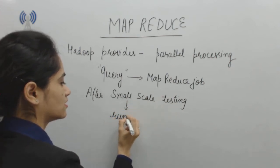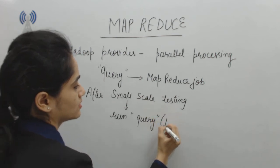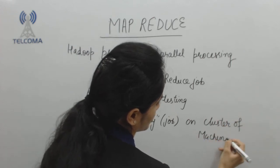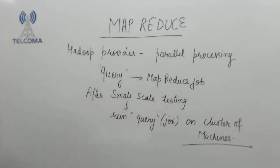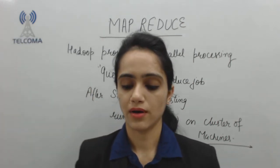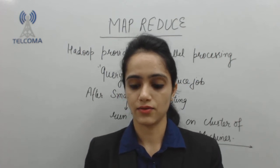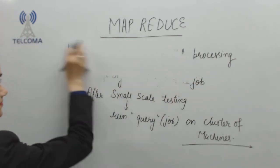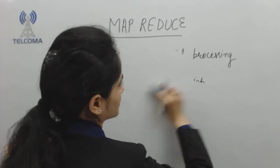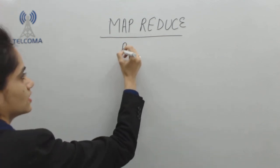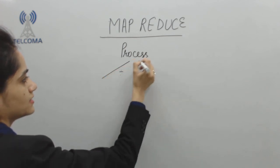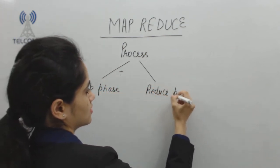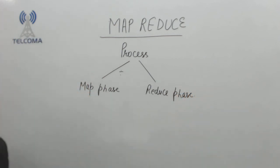We require running our job — which is also called a query — on a cluster of machines to solve that query. MapReduce works by breaking the processing into two phases: the first is the map phase and the second is the reduce phase.